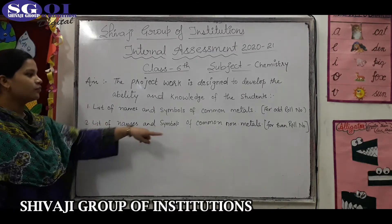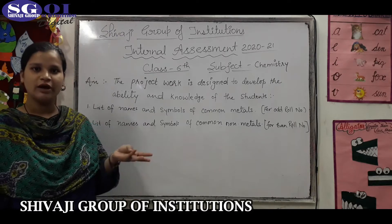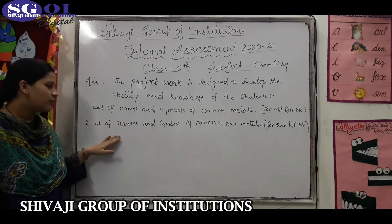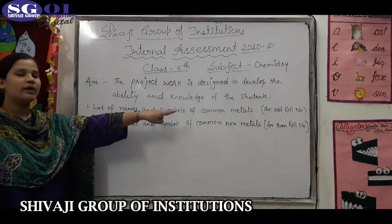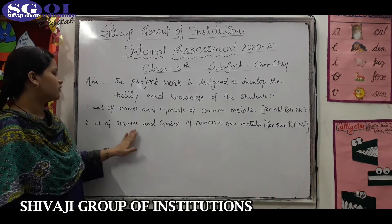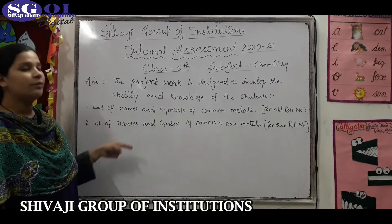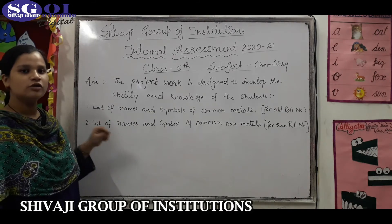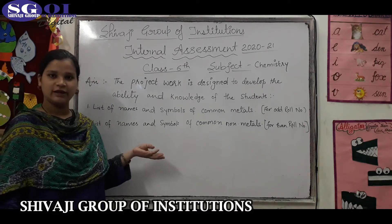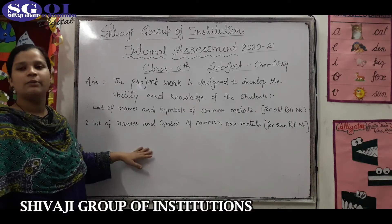For even roll numbers — that is, roll numbers 2, 4, 6 — what will you do? You will list the names and symbols of common non-metals. Non-metals like chlorine, oxygen, etc. All of these things you will do in the table.